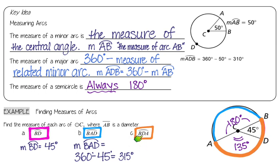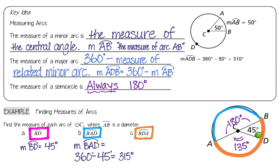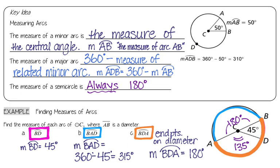Now arc BDA has the same letters as BAD but in different order. The endpoints are B and A, and it goes through D. Looking at the diagram, that happens to be a semicircle because the endpoints are on a diameter — so arc BDA equals 180 degrees.